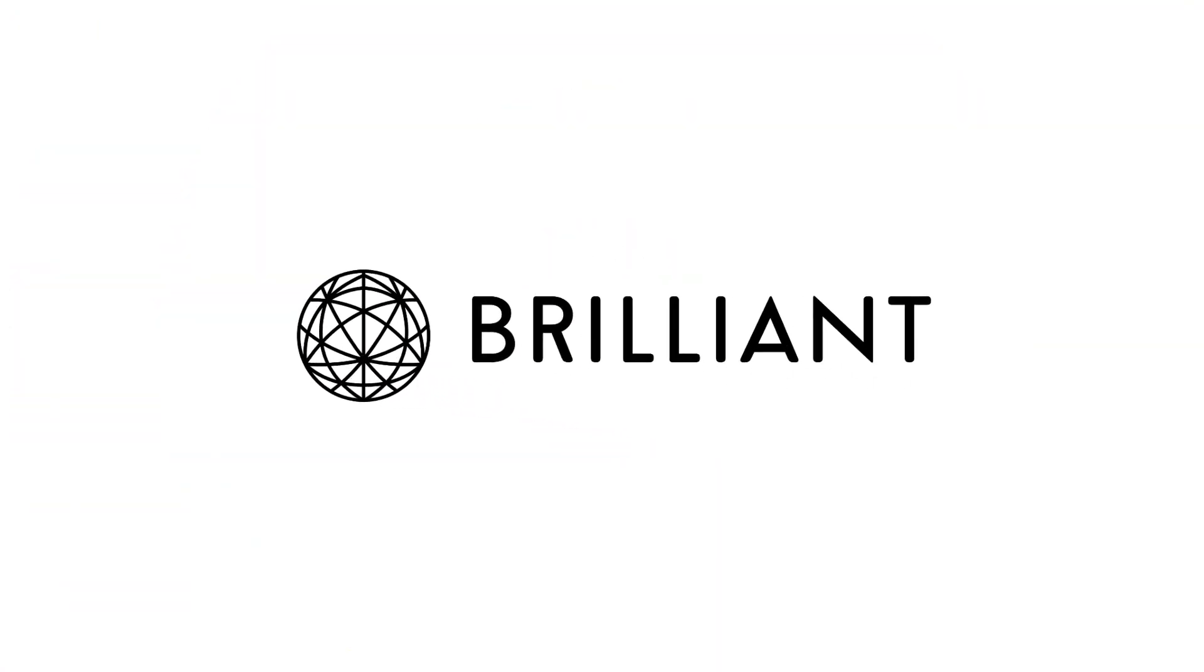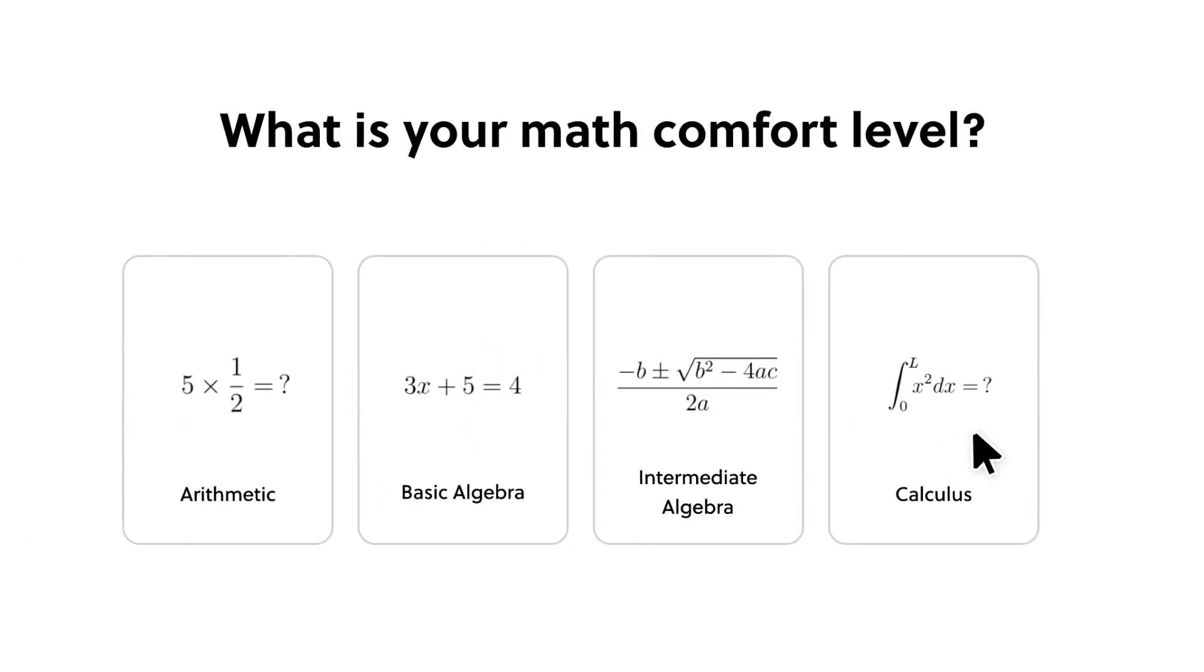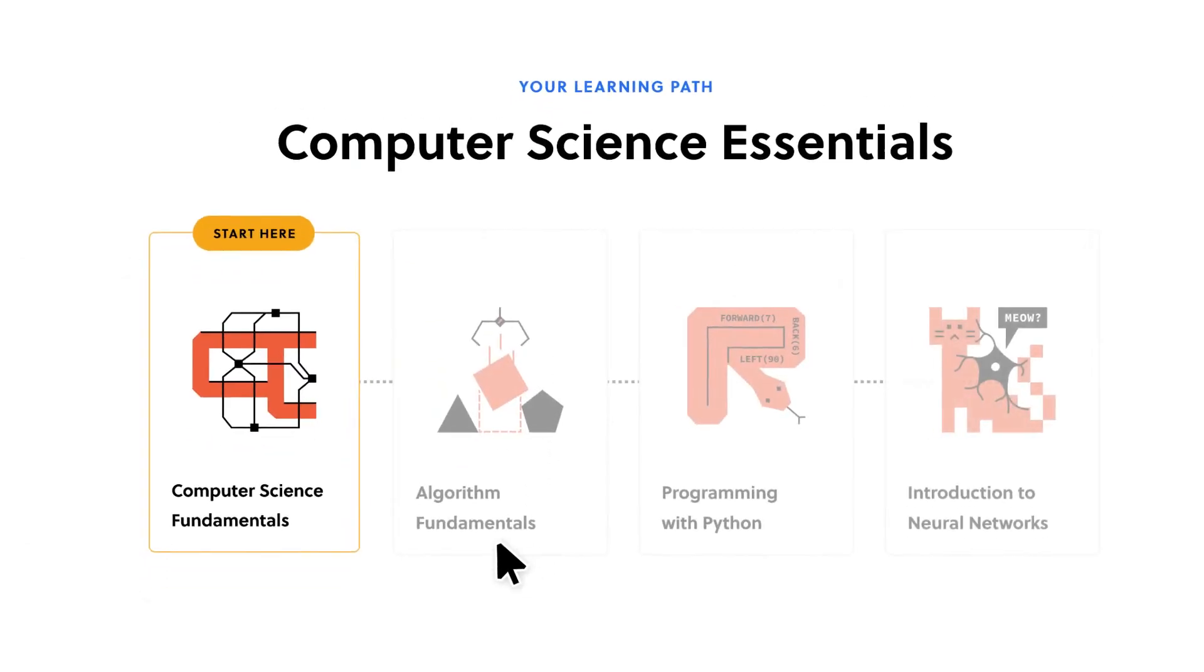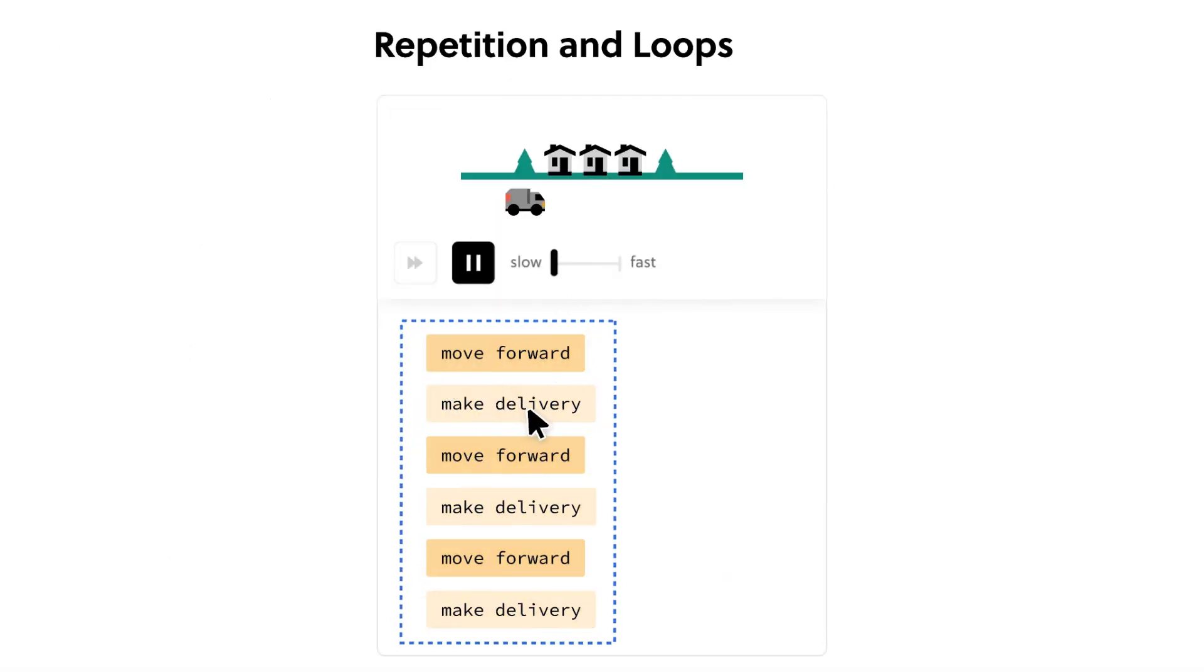Brilliant.org is one of the best ways to interactively learn computer science, math, and physics. There's thousands of lessons from computational biology to the history of mathematics to data science, neural networks, and more, with new lessons being added every month.